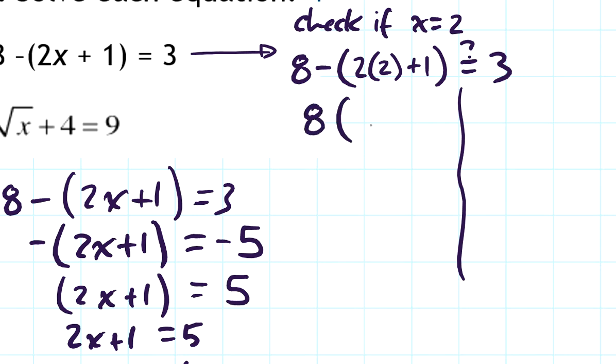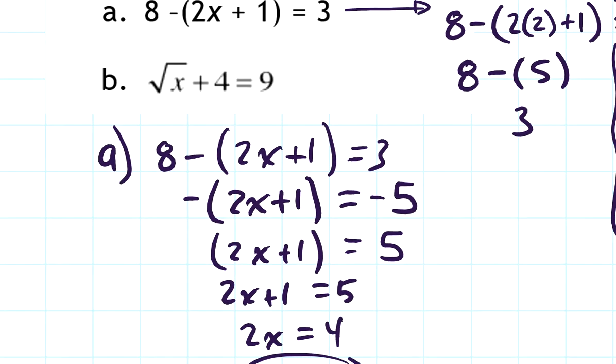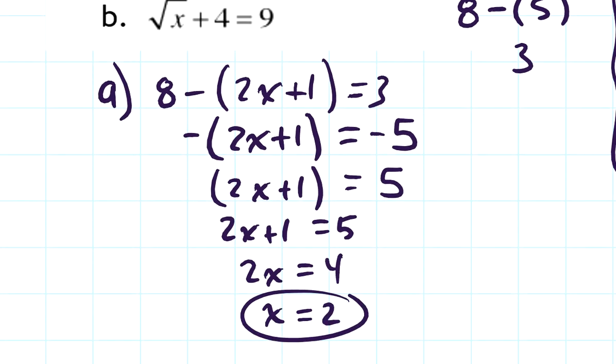This becomes 8 times—let's see, 2 times 2 is 4, 4 plus 1 is 5. So this becomes 8, and I forgot, it's 8 minus this 5. And 8 minus 5 is 3, and that's exactly what I had on the other side. So it does check. My solution is x equals 2.